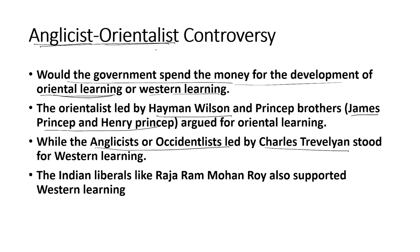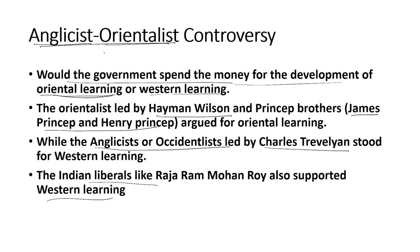The Orientalists demanded the introduction of Oriental learning, while the Anglicists demanded Western learning. Regarding the Indian position during this controversy, socio-religious reform leaders like Raja Ram Mohan Roy took the side that Western learning should be introduced in India. He believed that by introducing Western learning, rationalism and scientific approach could be developed among the Indians. This controversy came to be known as the Anglicist-Orientalist controversy.